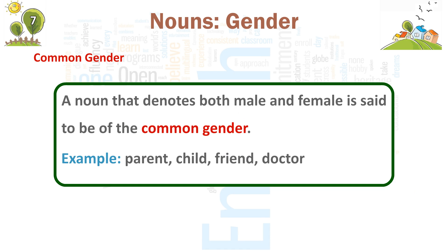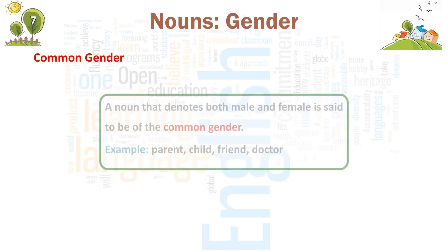Common gender. A noun that denotes both male and female is said to be of the common gender. Examples: parent, child, friend, doctor.